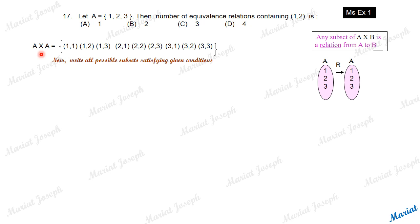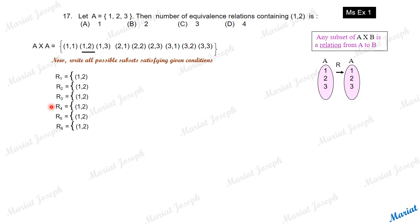Any relation is a subset of this Cartesian product — you take out a few pairs and make a subset. Every subset you make is a relation from set A to set A. But we have to make an equivalence relation, and any subset we make should also contain the pair (1, 2).